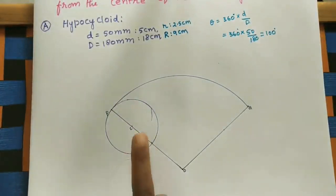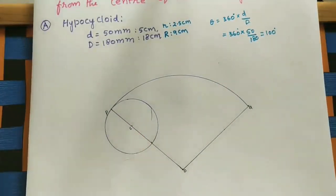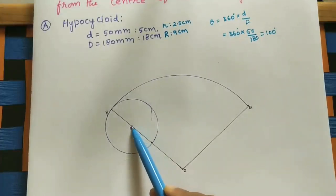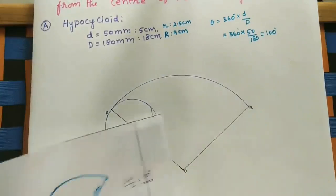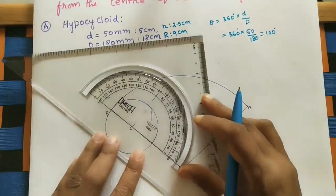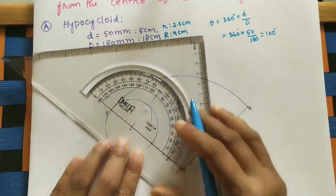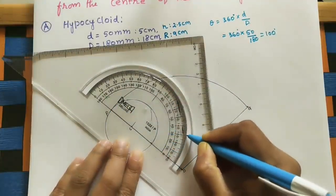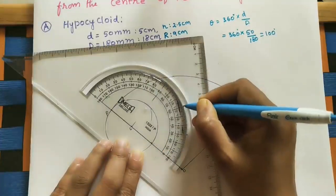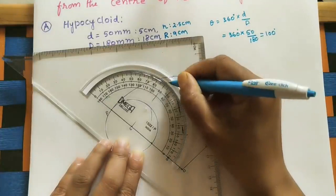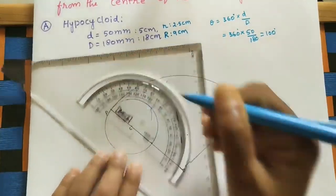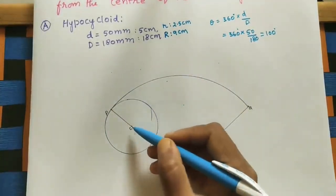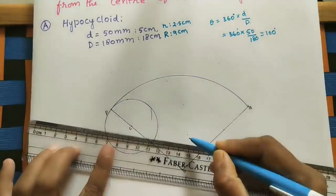Now divide this smaller circle into 12 equal divisions. The full angle at center is 360°, so each division is 360° ÷ 12 = 30°. Using a protractor, mark points at every 30 degrees: 30, 60, 90, 120, 150 degrees and so on. Join all these points to the center within the circle.